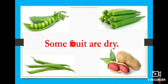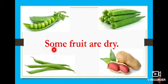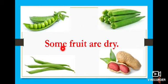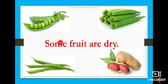And look at the next one. What is this, children? Pea. Very good. And what's this? Lady's finger. And then what is this? Beans. And what's this? Peanut, otherwise groundnut. Now look here — some fruits are dry — S-O-M-E F-R-U-I-T A-R-E D-R-Y. These fruits are dry. When you touch and press this fruit, you get no watery substance, because these are all dry things.